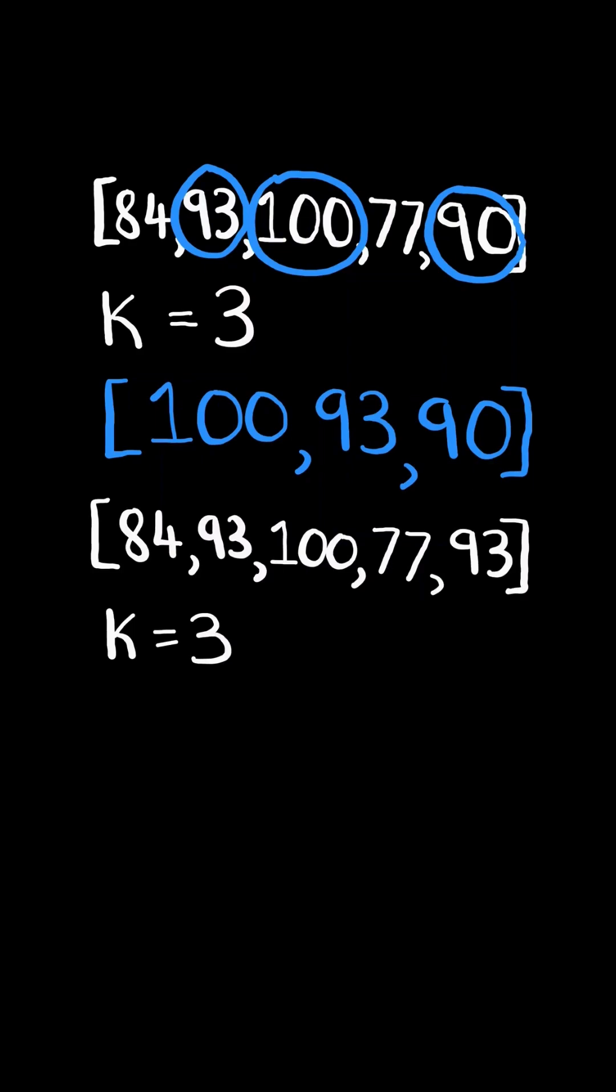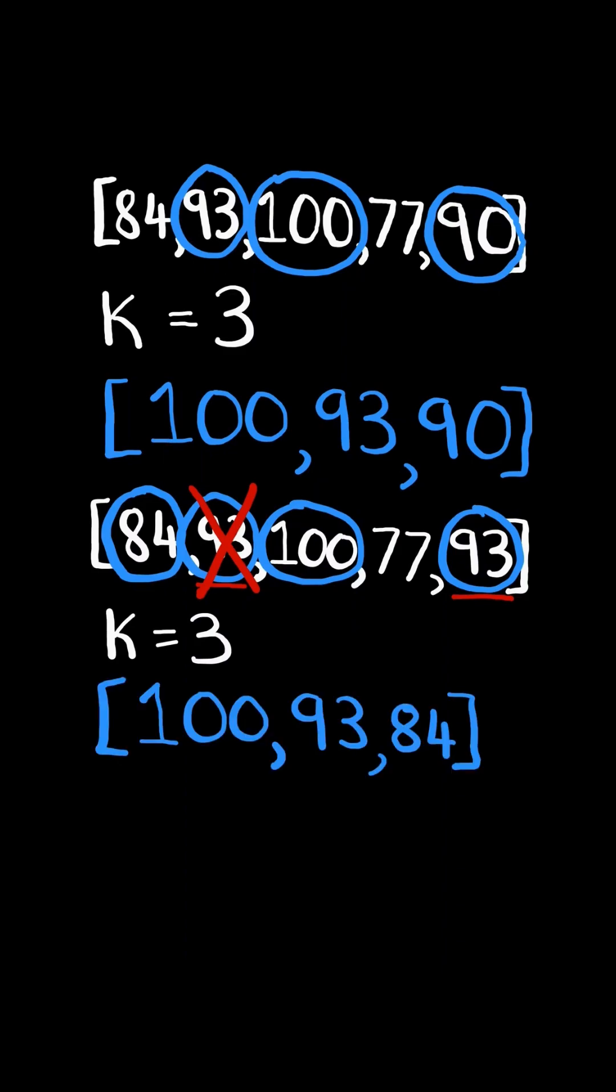Consider this new example. The k largest numbers are the following, but notice it's not distinct because 93 occurs twice. So we drop one of the 93s and consider the next largest number and return the k largest distinct numbers in descending order.